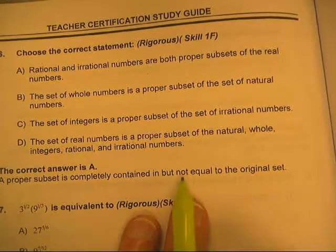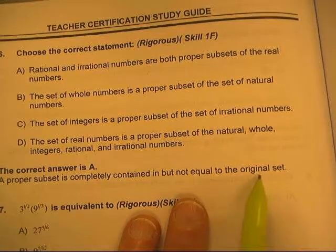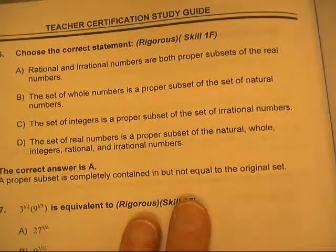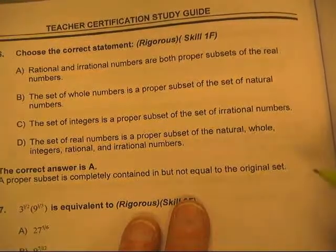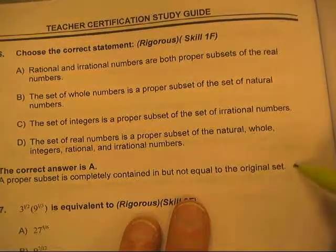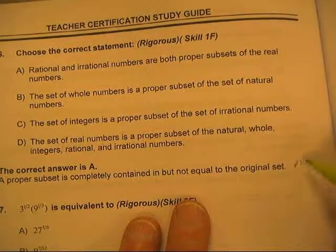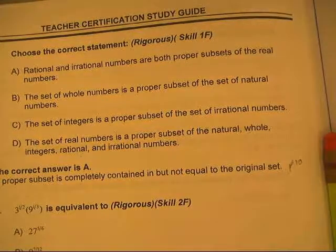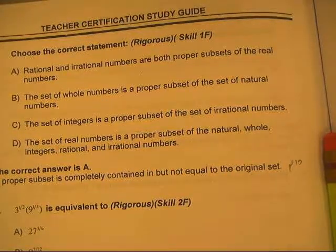A proper subset is completely contained in but not equal to the original set. You can look on page 10 for a description of this — there's also a Venn diagram over there, so it'll be pretty good.